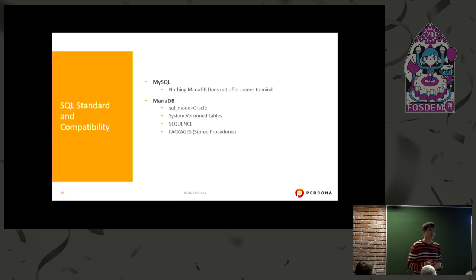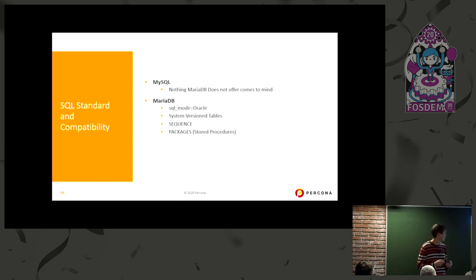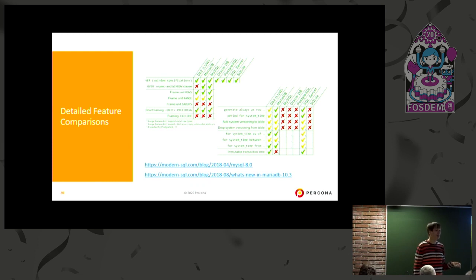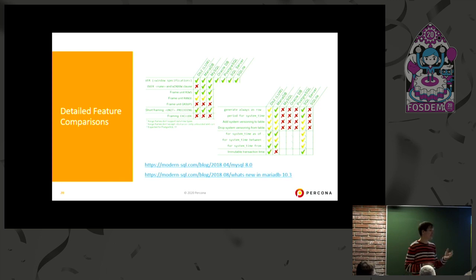On SQL standards, I don't think MySQL now offers something that MariaDB doesn't have in the latest version. MariaDB has done a lot, especially focused on migration from Oracle — it has system-versioned tables, sequences, packages, and other features. If you want a detailed feature comparison, modernsql.com has articles covering MySQL 8 and MariaDB 10.3, comparing detailed SQL features not only between each other but also against Postgres and a bunch of commercial databases.